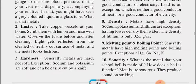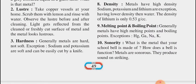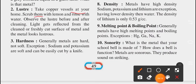The next physical property is luster. Take copper vessels at your home, scrub them with lemon and rinse with water — your mom may have done this while washing utensils, using lemon for copper or iron metals. After rinsing, it gives a shine. Observe the luster before and after cleaning. Light is reflected from the clean or freshly cut surface of a metal, and the metal looks lustrous.